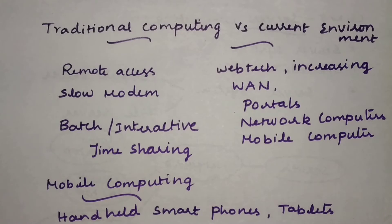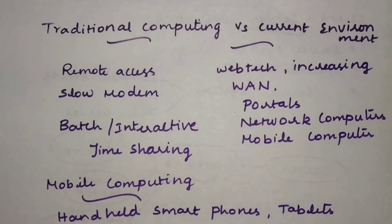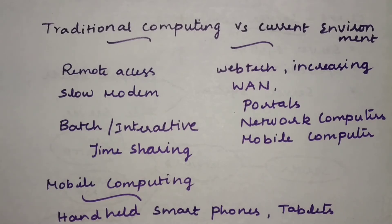We will compare, in brief, the traditional computing environment and the current computing environment. In the traditional computing environment, one or two decades ago, a typical office would have one PC connected to a network, connected to servers such as a file server or print server. Remote access was very difficult, and portability could be achieved only through a laptop.